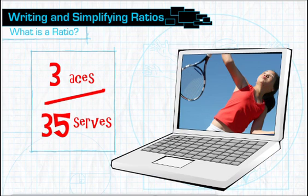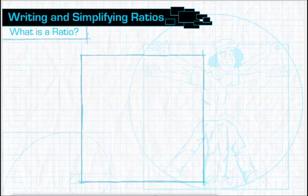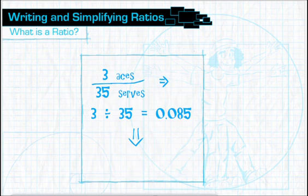Sometimes the two quantities being compared will be separated by a colon, and sometimes you will see the ratio expressed as a percent or decimal. All three methods do the same thing. They compare two quantities.